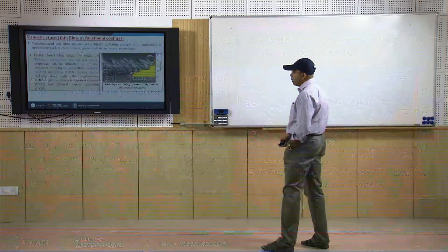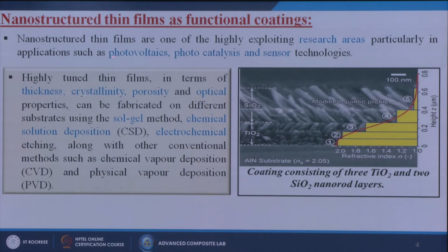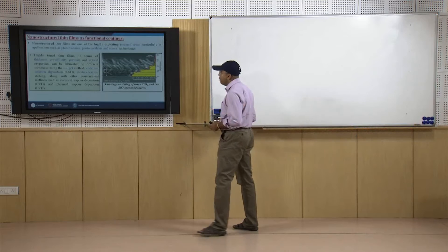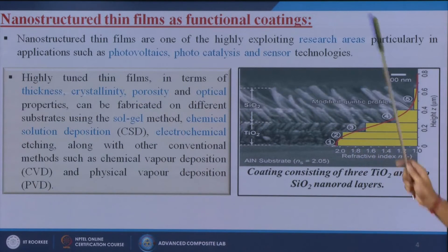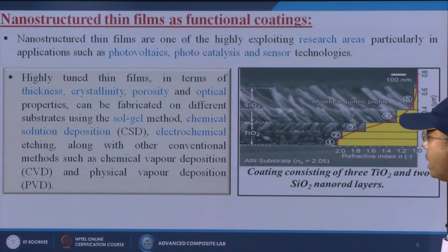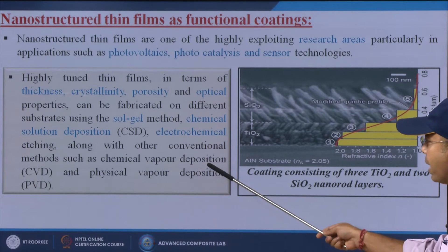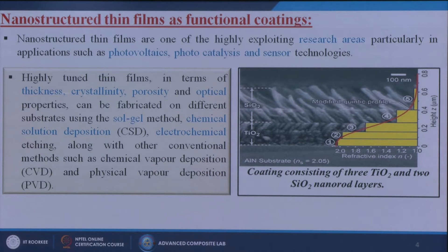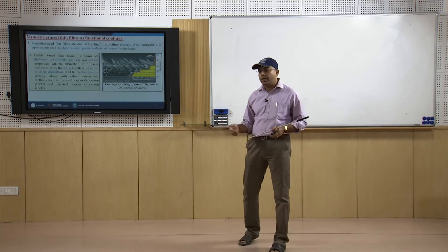Now we discuss nanostructure thin films as functional coatings. Nanostructure thin films are one of the highly exploited research areas, particularly in applications such as photovoltaics, photocatalysis, and sensor technologies. Highly tuned thin films in terms of thickness, crystallinity, porosity, and optical properties can be fabricated on different substrates using the sol-gel method, chemical solution deposition method, electrochemical etching, along with conventional methods such as CVD (chemical vapor deposition) and physical vapor deposition. These processes will be covered in detail in later slides.